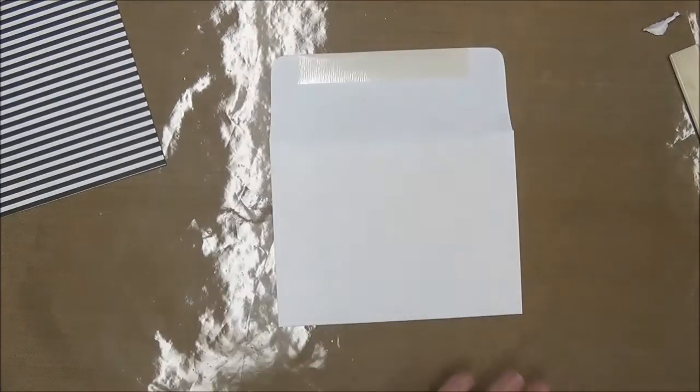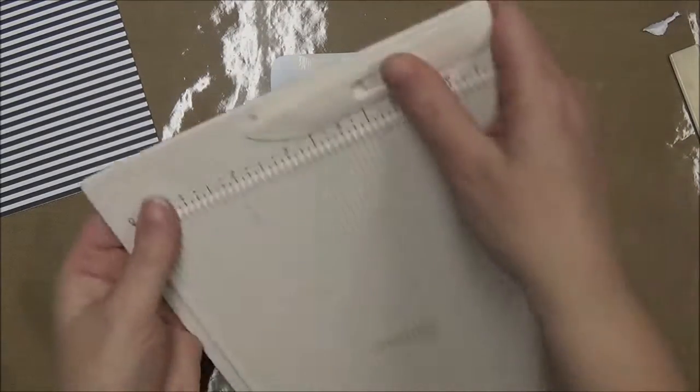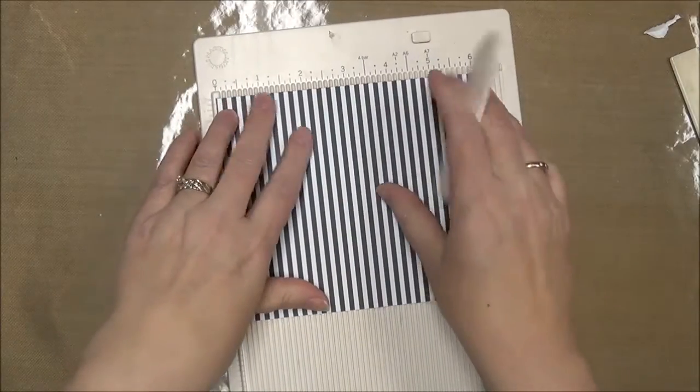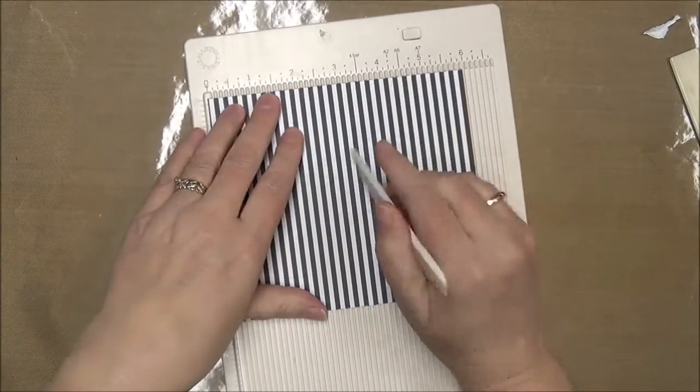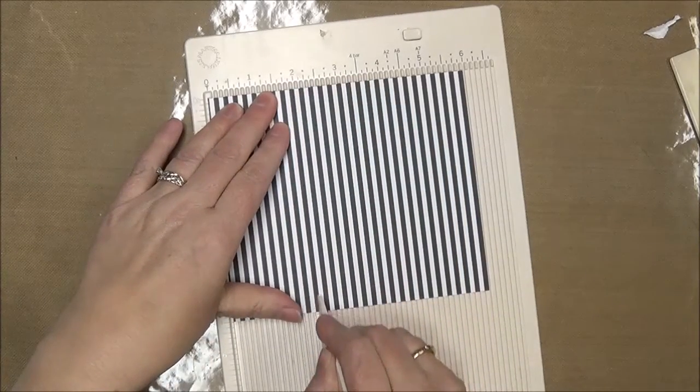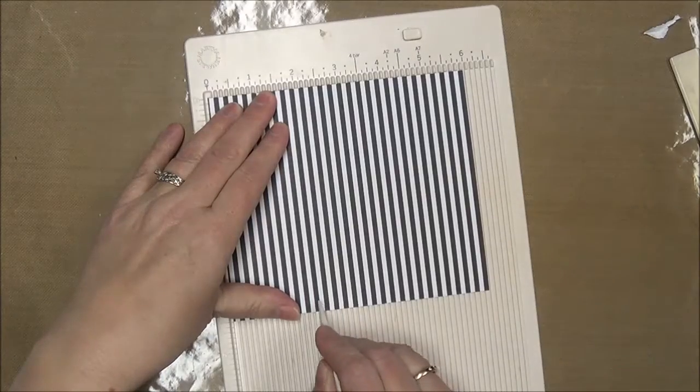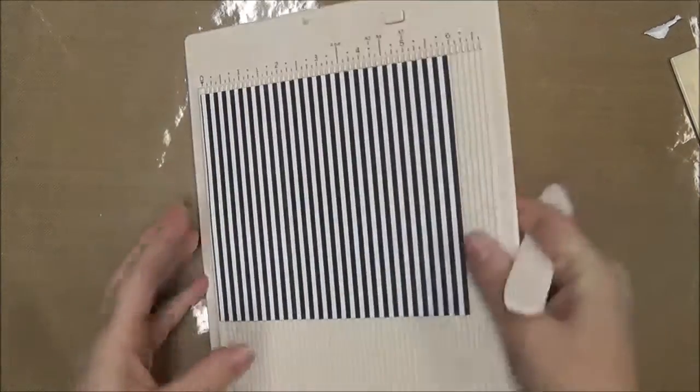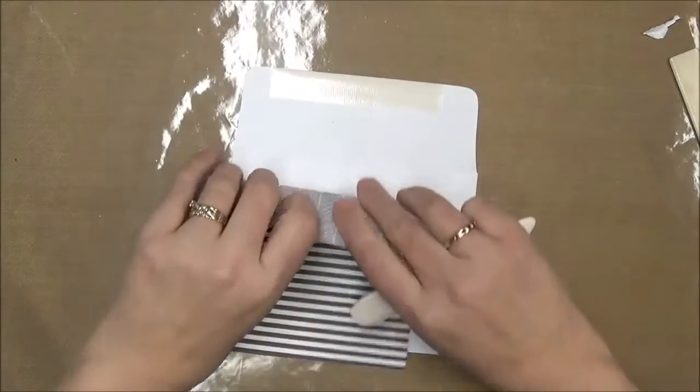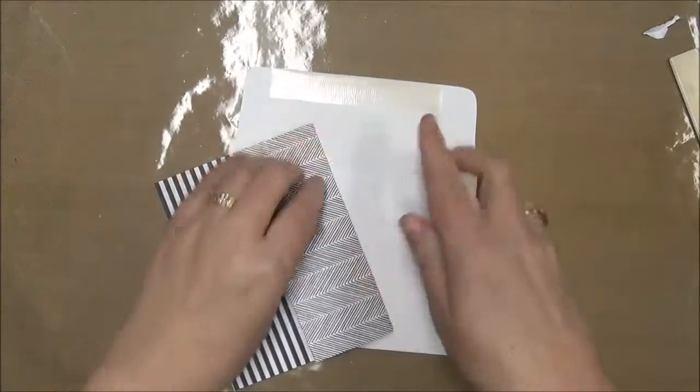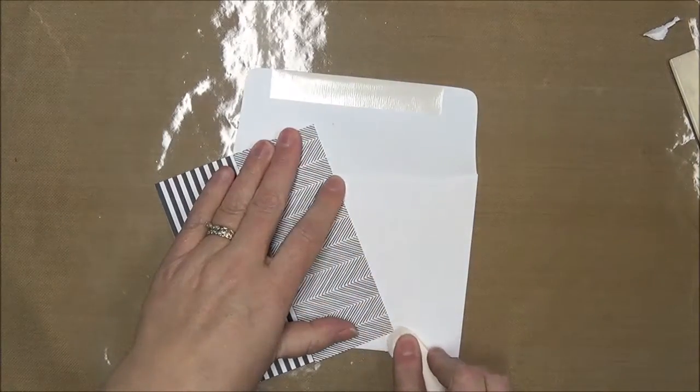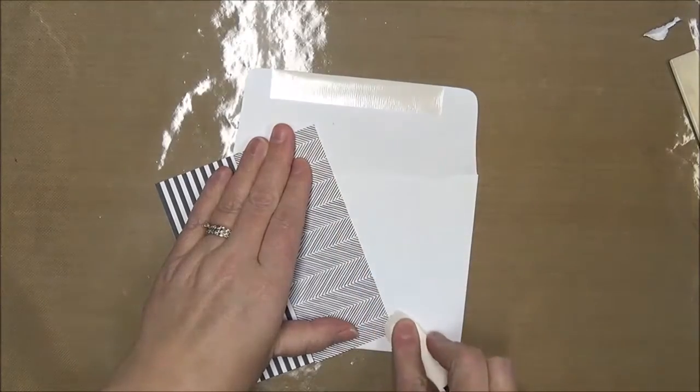So I'm going to pull out my Martha Stewart scoreboard here. I'm going to lay my paper down and I am going to do this one right at 2 inches. I'm just going to score it just like so and then I'm going to turn that flap back on itself and really crease it tight because if it's not really tight, it's not going to fold well with the envelope.